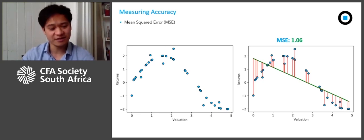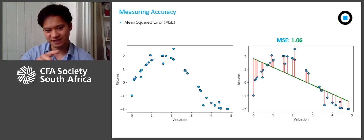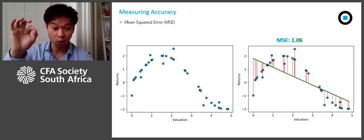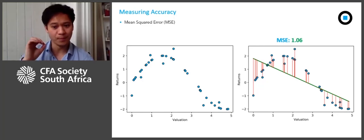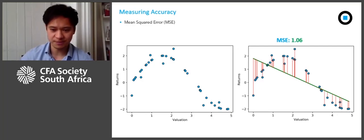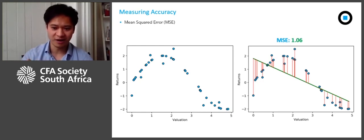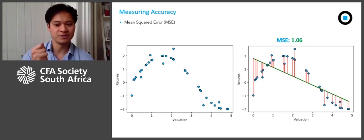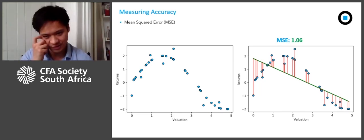Because our model is linear and monotonic — always downward sloping in this case — the economic intuition is that cheaper valuation always equals higher return. You can measure the accuracy of the model more formally by taking the distance between all data points and the model prediction — that's the green line — giving you these red lines as errors. If you take all of these red lines, square them, and take the average, you get the mean squared error of 1.06.